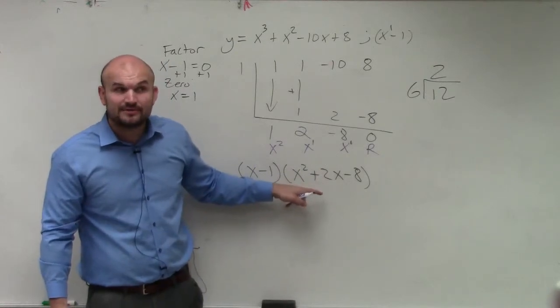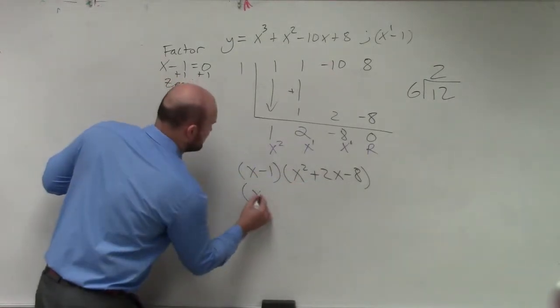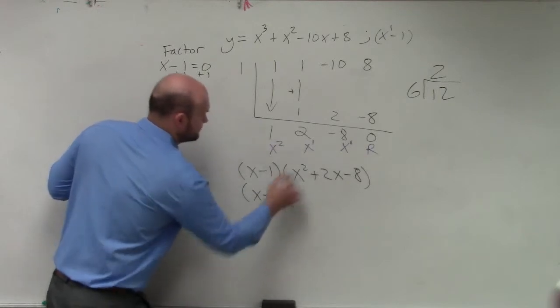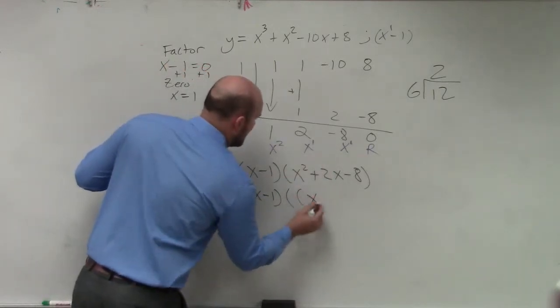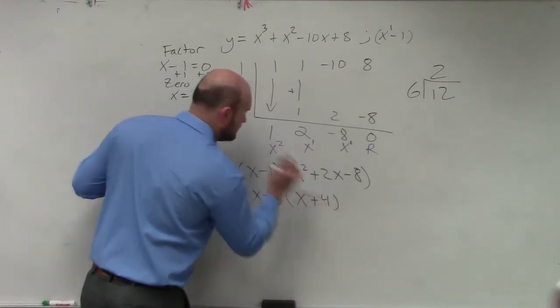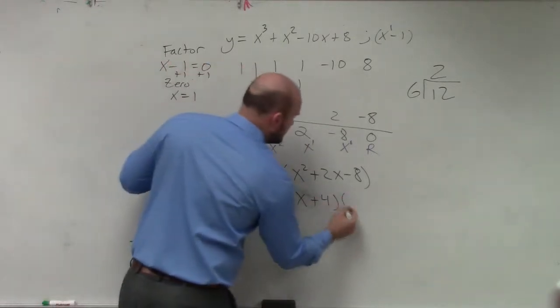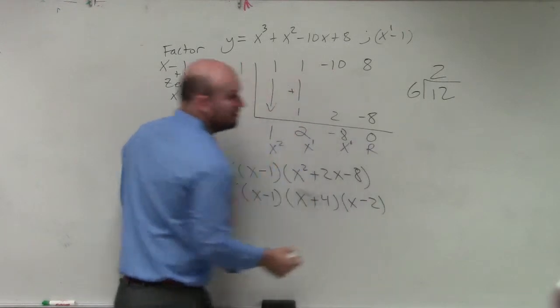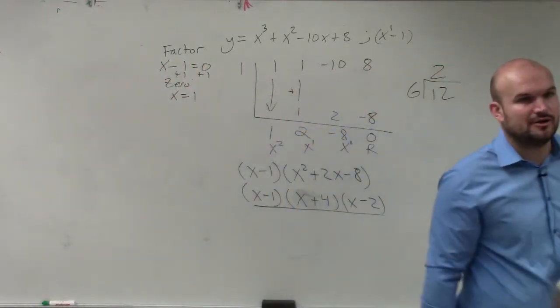It's a trinomial, right? We can factor trinomials. So when we factor this down, what we get is x plus 4, no, yes, x plus 4, x minus 2. That is your completely factored polynomial.